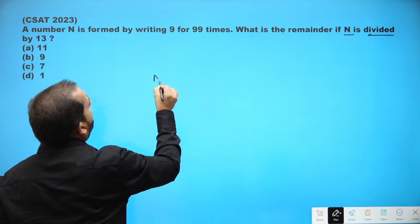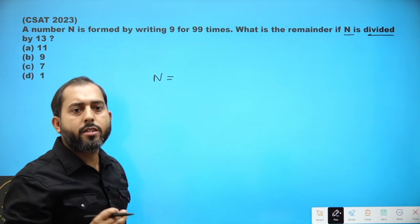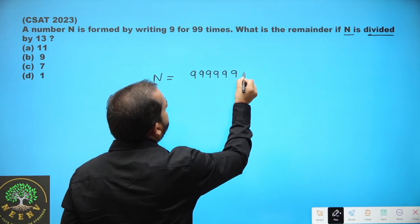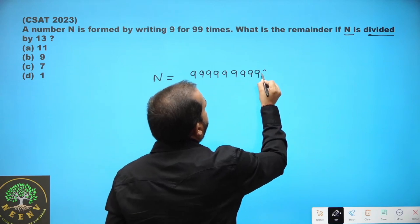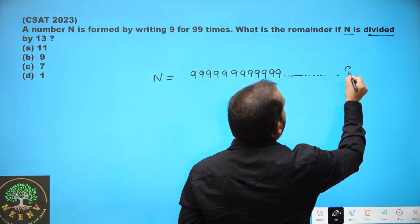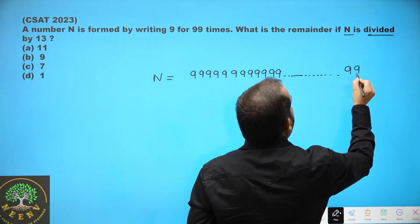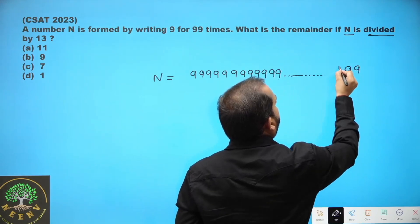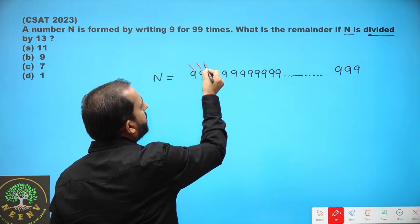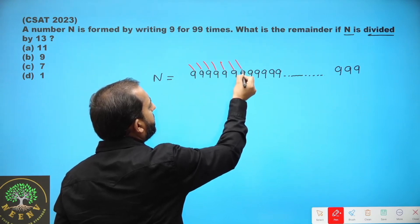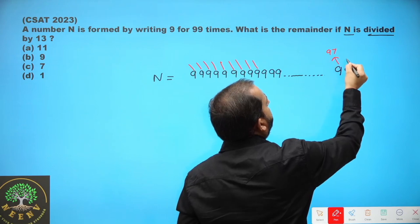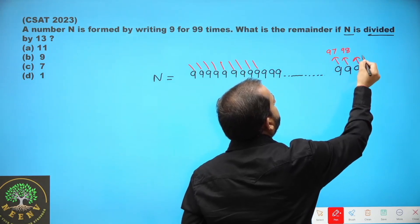So a number is formed by writing 9 how many times? 99 times. So 9 is written 1 time, 2 times, 3 times... and in this way 9 has been written 99 times. So this is the first 9, second 9, third 9, fourth 9, fifth 9, sixth 9, seventh 9, eighth 9, and continuing like this — the 97th 9, 98th 9, and this is the 99th 9.